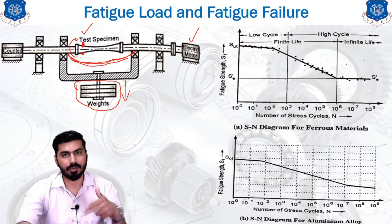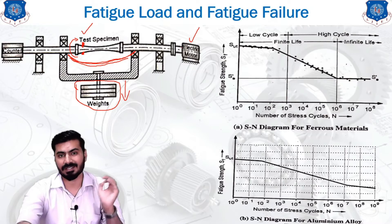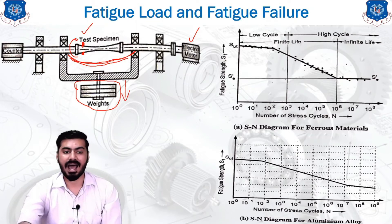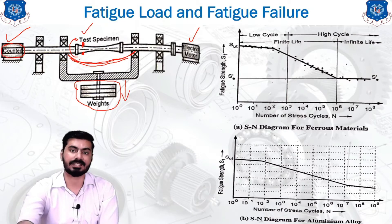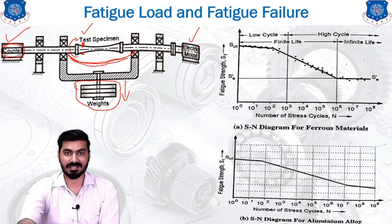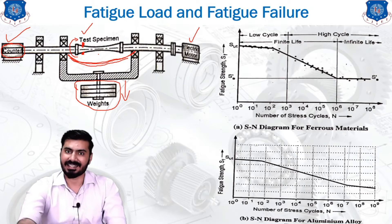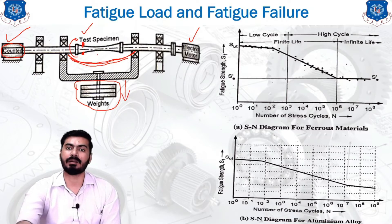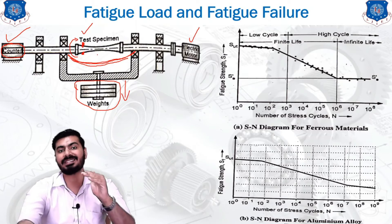The rotation continues and the electric motor rotates at a certain RPM. Each rotation cycle is counted using a counter, which keeps a record of the number of cycles the specimen has endured. Basically, we are testing how many cycles the specimen can withstand. When the specimen fails, the counter stops and gives us the number of cycles at which failure occurred.